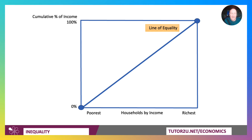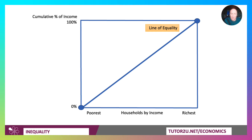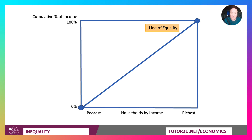Now if there was no income and wealth inequality in a country, you'd be able to plot the Lorenz Curve as a straight line, diagonal from left to right — a 45-degree line, a line of equality. Everybody would have the same percentage of income or wealth. So the top 10% would have 10% of the income, and the bottom 10% would have 10%. You'd have a line of equality from left to right.